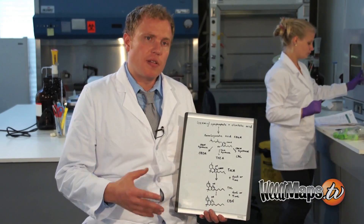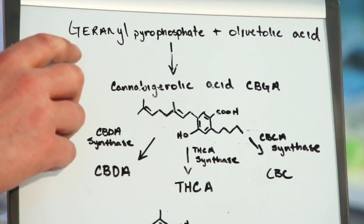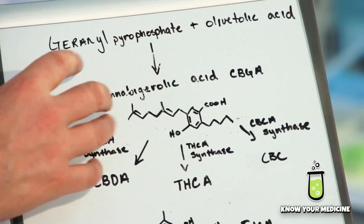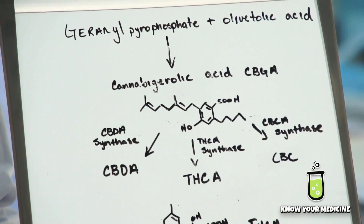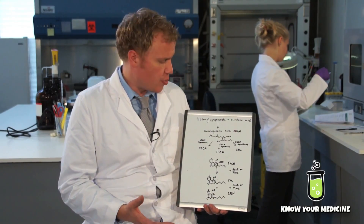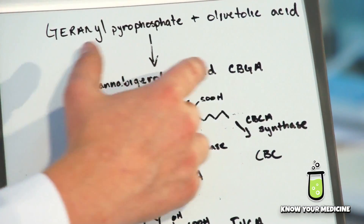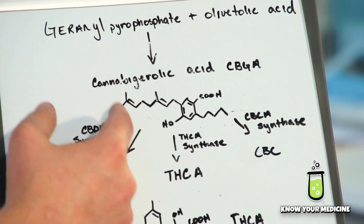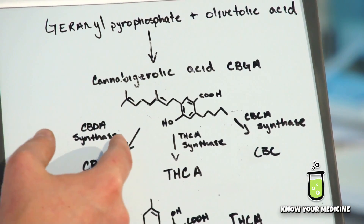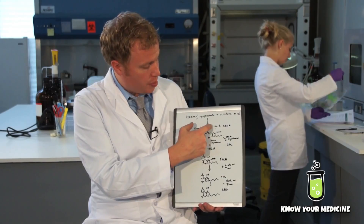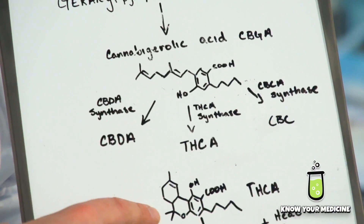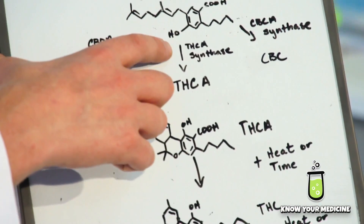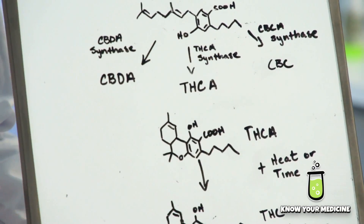I'll show you how CBN is synthesized in the plant. CBN starts with geranyl pyrophosphate and olivetolic acid, like most of the cannabinoids. Those two come together in an enzyme-catalyzed reaction. They form cannabigerolic acid, CBGA, and CBGA folds upon itself into rings and makes THCA using THCA synthase, which is an enzyme.